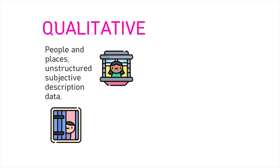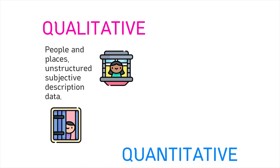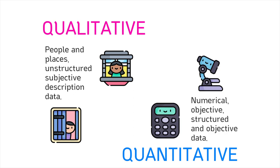Ethnography is a form of qualitative research which focuses on people and places. It involves unstructured, subjective description of data. Quantitative research, by contrast, focuses more on numerical data and statistics. It is typically more structured and objective in its approach.